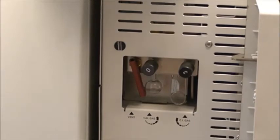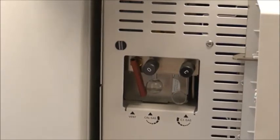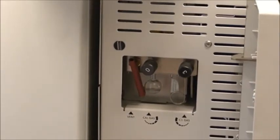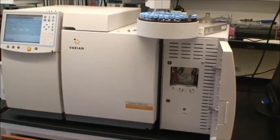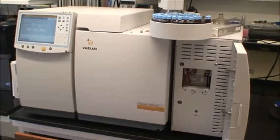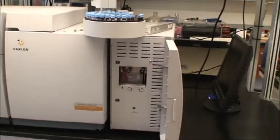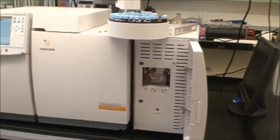The ion source is responsible for breaking the molecules up and giving them a positive charge. The ions are then filtered based on mass. The actual detector counts the number of ions with a specific mass and sends the information to the computer where a spectrum is developed.